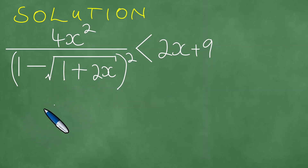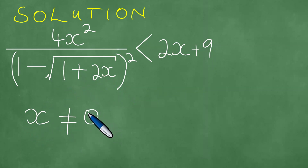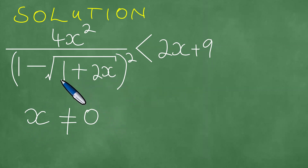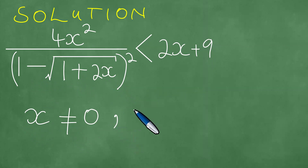First things first, we note that we have 1 plus 2x in the denominator, and we therefore have to write down a couple of restrictions. One of the restrictions must be that x cannot be 0. Because if x equals 0, you would have 1 plus 0 under the square root, and 1 minus 1 becomes 0, giving division by 0.